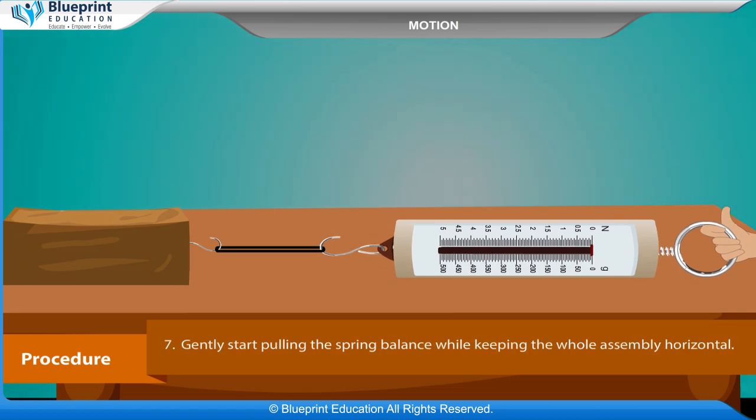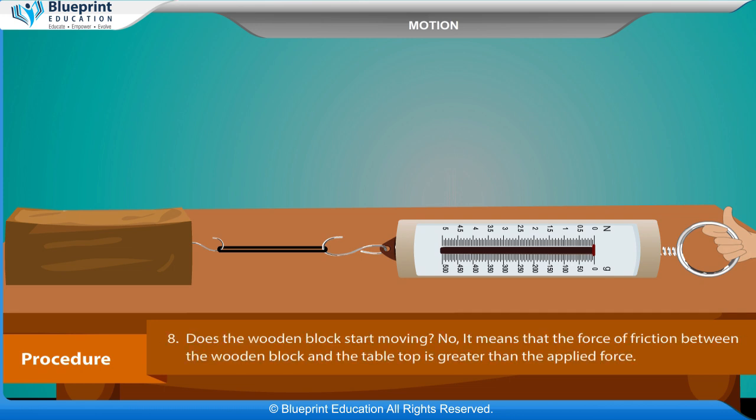Gently start pulling the spring balance while keeping the whole assembly horizontal. Does the wooden block start moving? No — it means that the force of friction between the wooden block and the table top is greater than the applied force.